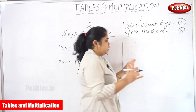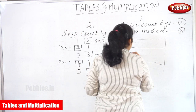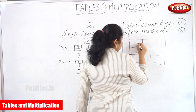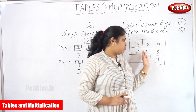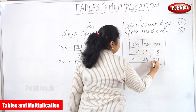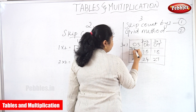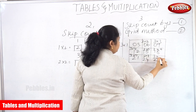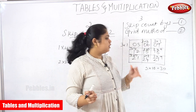In the grid method, we draw one big square with two horizontal lines and two slanting lines. We start putting numbers one through nine, then do the backward counting one through nine, and fill the first column with zero, second with one, and third with two. So: three into one is three, three into two is six, three into three is nine, three into four is twelve, three into five is fifteen, three into six is eighteen, three into seven is twenty-one, three into eight is twenty-four, three into nine is twenty-seven, and three into ten is thirty.